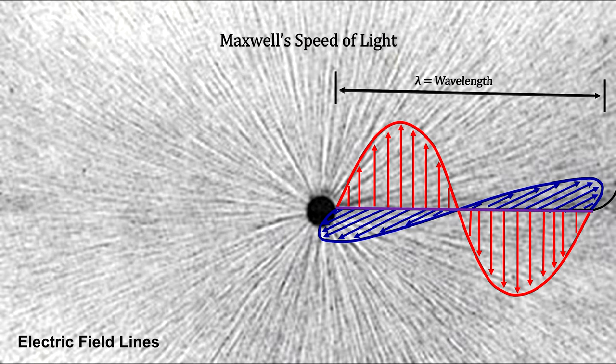So the accelerated electron creates a disturbance in the electric field that propagates itself through space as an electromagnetic wave.